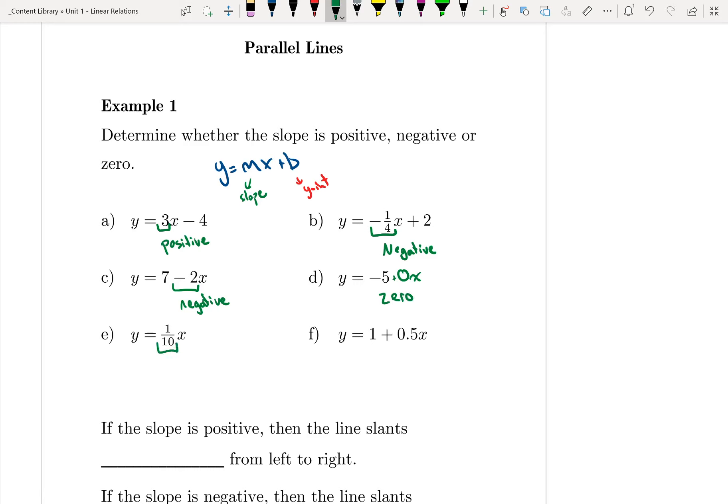In e, looking at the value in front of x, one-tenth, it's a positive fraction. Even though it's a fraction, it's still positive, so that means my slope is positive.